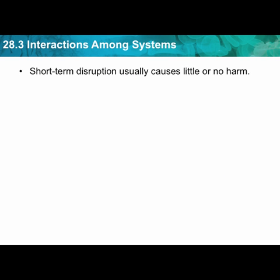Short-term disruptions cause little or no harm — like holding your breath until you have to breathe, or not getting a lot of sunlight for vitamin D, or having blood sugar slightly out of balance for a little bit. But long-term disruptions can cause a lot more damage.